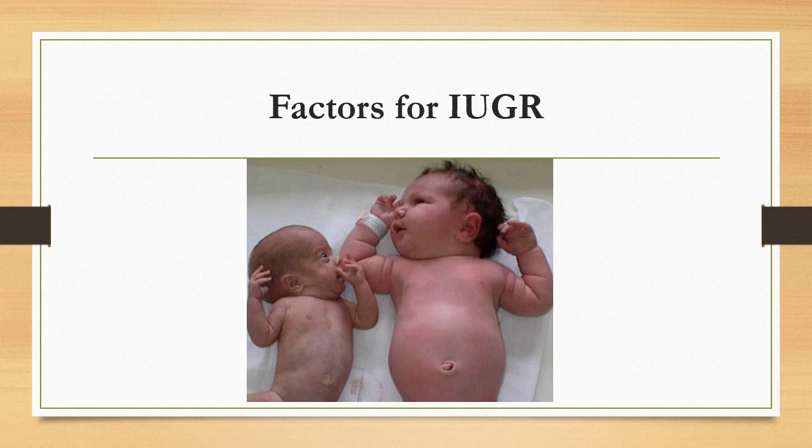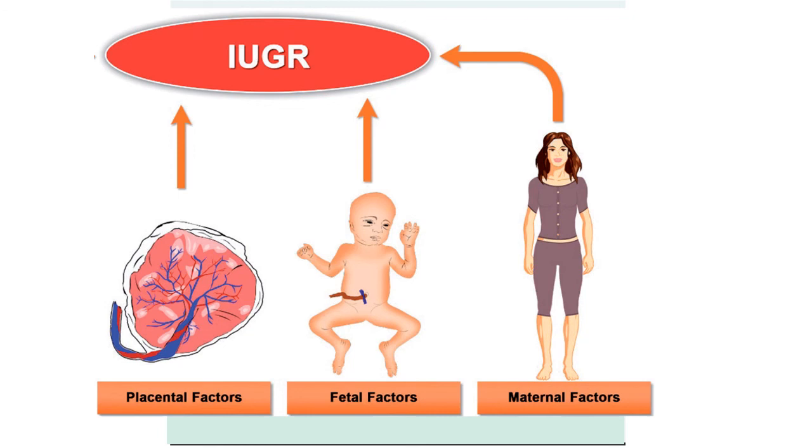Consider two babies both born at 40 weeks of gestation — one is much smaller than the other. If a baby is smaller in weight for gestational age, it is called small for gestational age or intrauterine growth restricted. The factors leading to IUGR largely overlap with those of prematurity, including placental, fetal, and maternal factors, though there are some subtle differences.